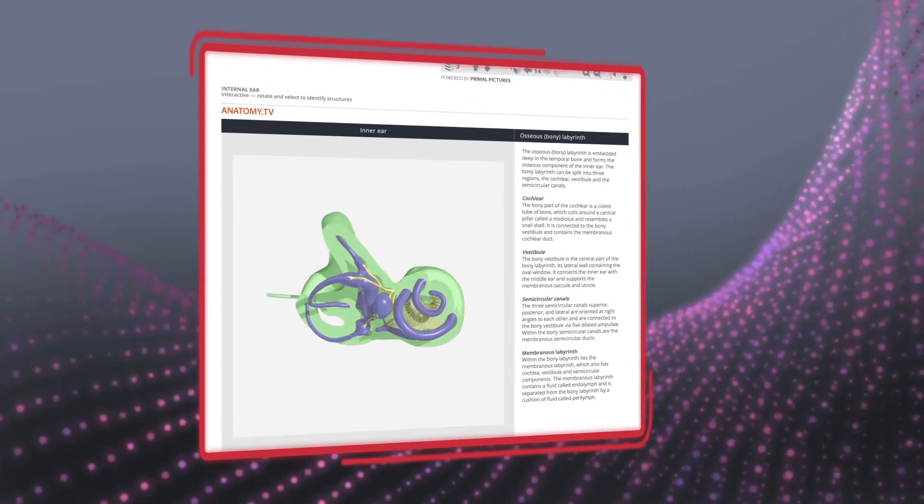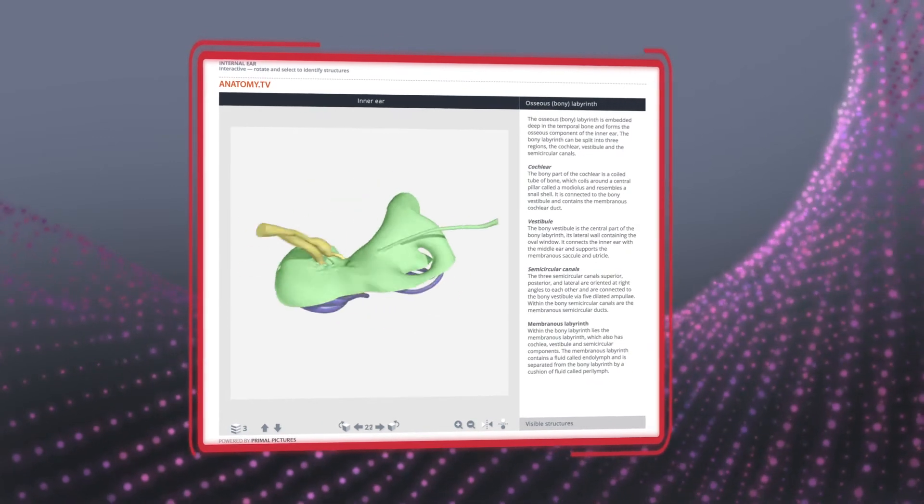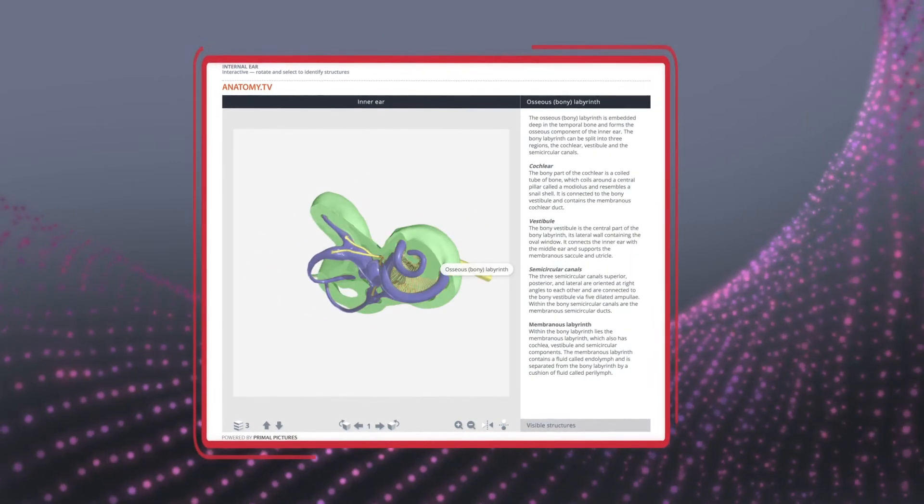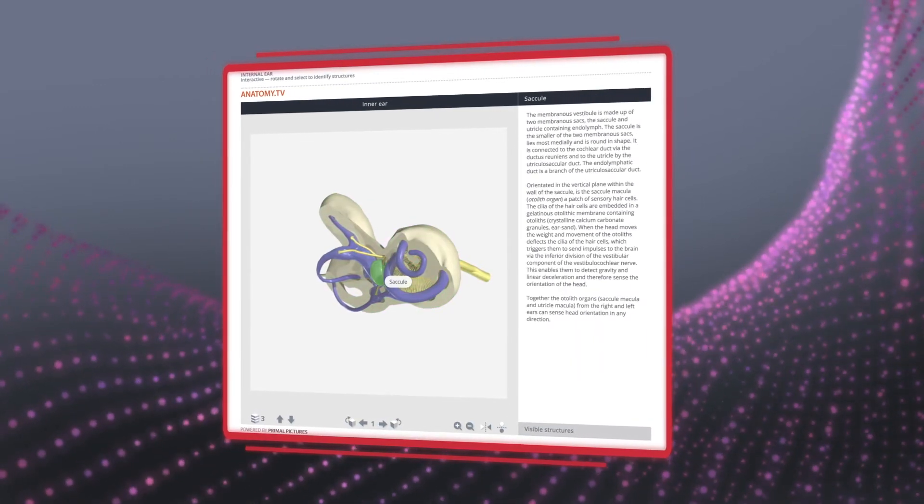Using embeddable viewer also ensures you retain the dynamic nature of the content, meaning it will rotate, layer, highlight, and display labels just as it does in the Primal platform to aid visual learning for your users.